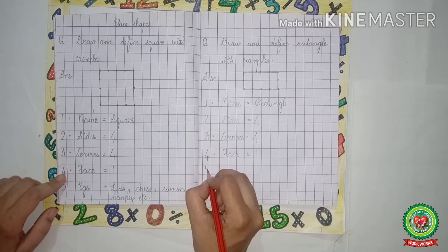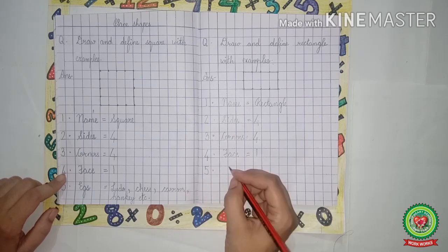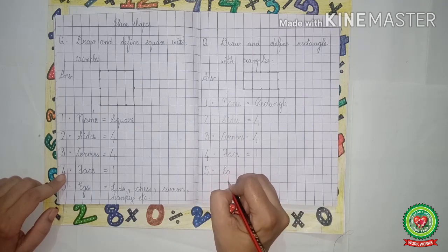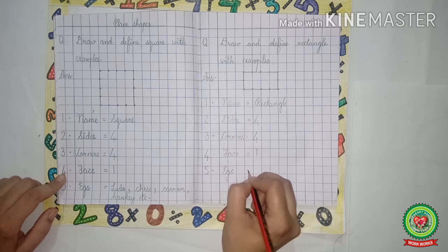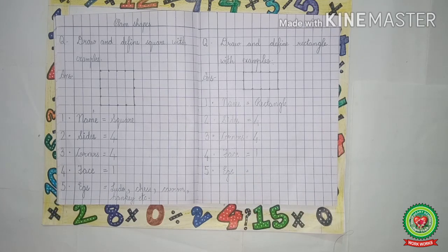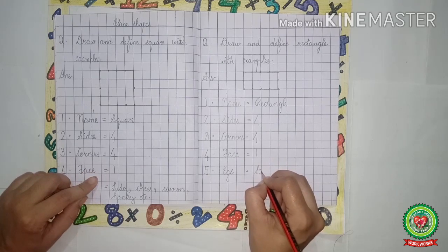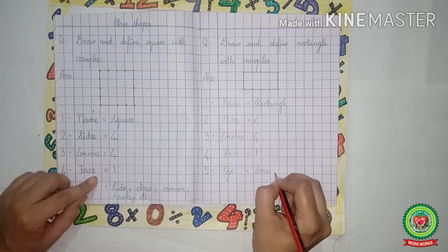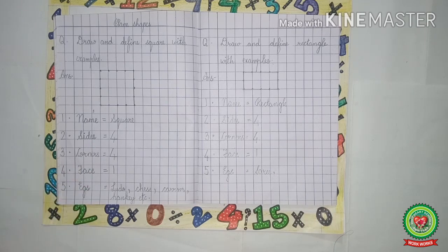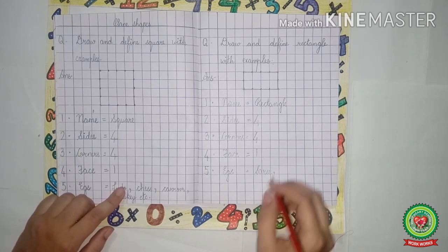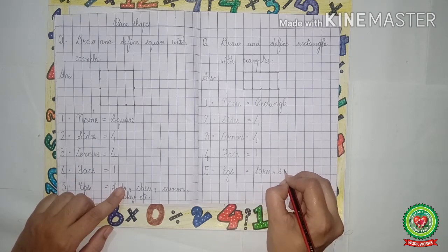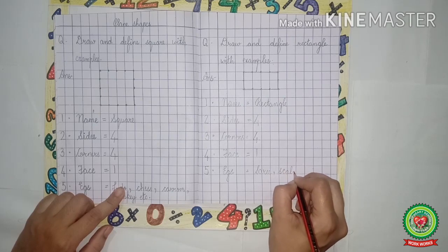Leave one line, five dot. E-G-S, examples. Equals to. What are the examples of rectangle? Saree, S-A-R-E-E, saree. Comma. Next example is scale, S-C-A-L-E, scale. Comma.